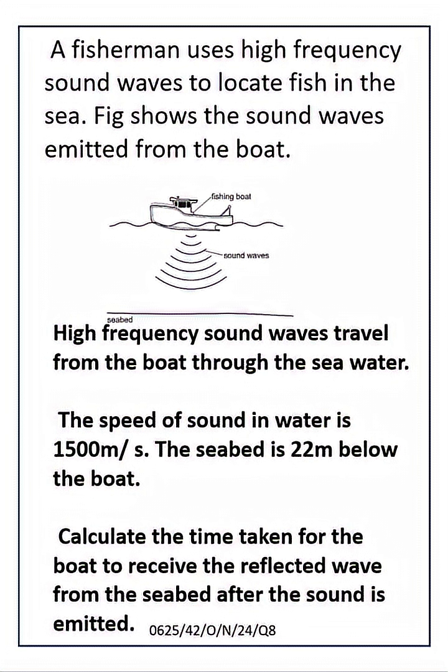A fisherman uses high frequency sound waves to locate fish in the sea. The figure shows the sound waves emitted from the boat. High frequency sound waves travel from the boat through the seawater. The speed of sound in water is 1500 m per second. The seabed is 22 m below the boat. Calculate the time taken for the boat to receive the reflected wave from the seabed after the sound is emitted.